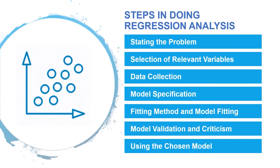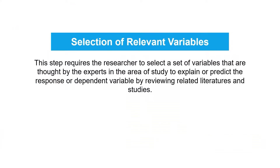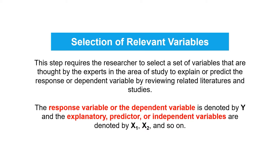Next is the selection of potentially relevant variables. This step requires the researcher to select a set of variables that are thought by the experts in the area of study to explain or predict the response or dependent variable, by reviewing related literatures and studies. The response variable or the dependent variable is denoted by y, and the explanatory, predictor, or independent variables are denoted by x sub 1, x sub 2, and so on.